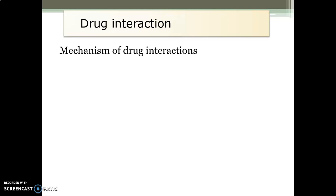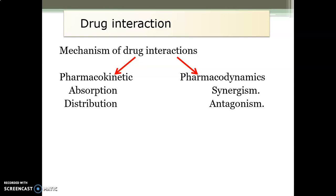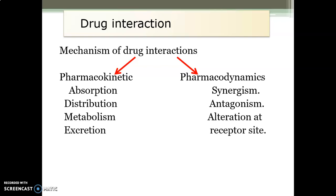The mechanism of drug interactions is generally studied under two mechanisms: pharmacokinetic mechanism and pharmacodynamic mechanism. Pharmacokinetic mechanisms include absorption, distribution, metabolism, and excretion, whereas pharmacodynamic mechanisms include synergism, antagonism, and alteration at the receptor site.